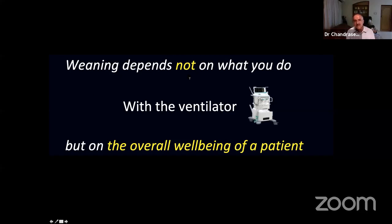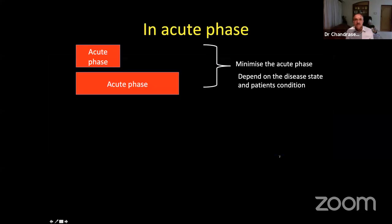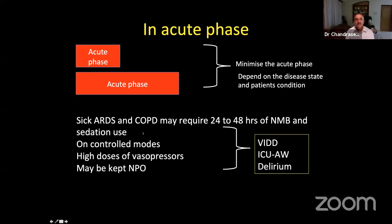In the acute phase, sick patients — ARDS, COPD — may be on neuromuscular blockers, sedation, uncontrolled modes, and high-dose vasopressors; nutrition is often withheld. These patients are at high risk for ventilator-induced diaphragmatic dysfunction, ICU-acquired weakness, and delirium — the triad that must be managed. Once you mitigate the effects of this triad or avoid it entirely, weaning success becomes greater. The next section will cover how to minimize the impact of each of these three complications.